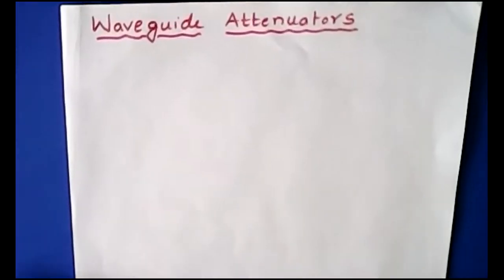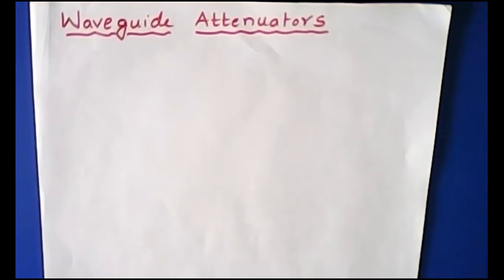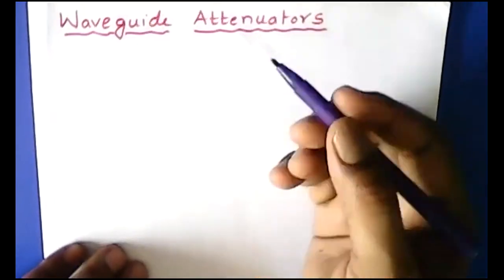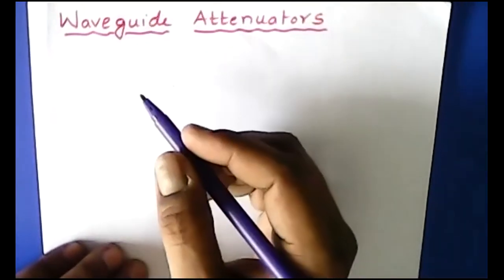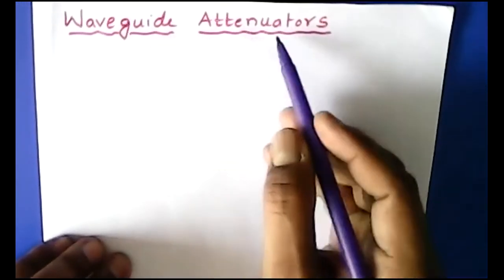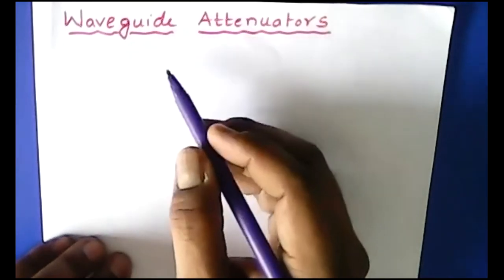Today we are going to discuss the continuation of the previous class. We are about to discuss waveguide attenuators. In the previous class we discussed all about microwave components.